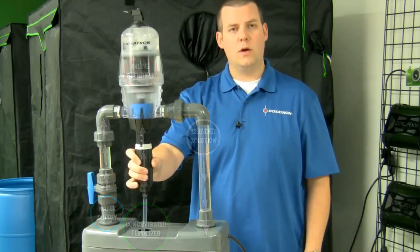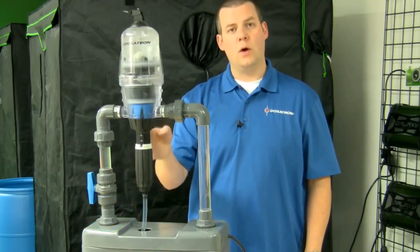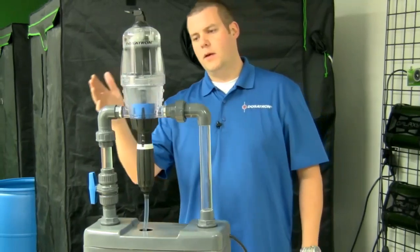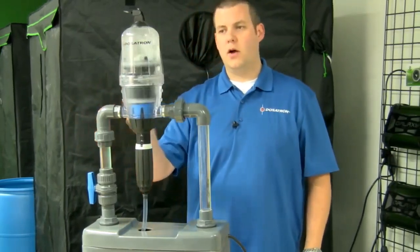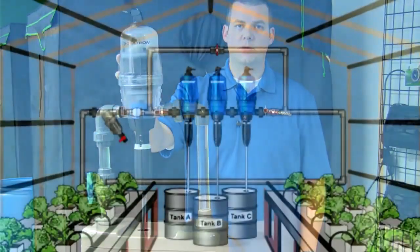So if we set this at 1 to 100, we're going to get 1 to 100 anywhere from about a third of a pint per minute all the way to 14 gallons per minute on this particular unit.